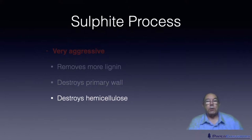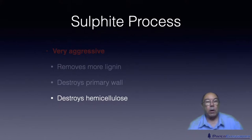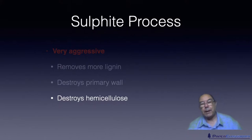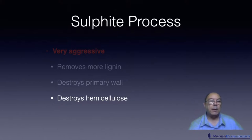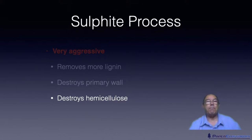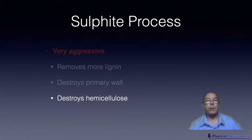The good thing about the sulfite process having destroyed the primary wall is that those fibers refine very easily and very quickly. However, the sulfite process also destroys the hemicellulose, which is bad — the hemicellulose contributes significantly to the strength of a sheet of paper, as I'll show you at the end of this tutorial.